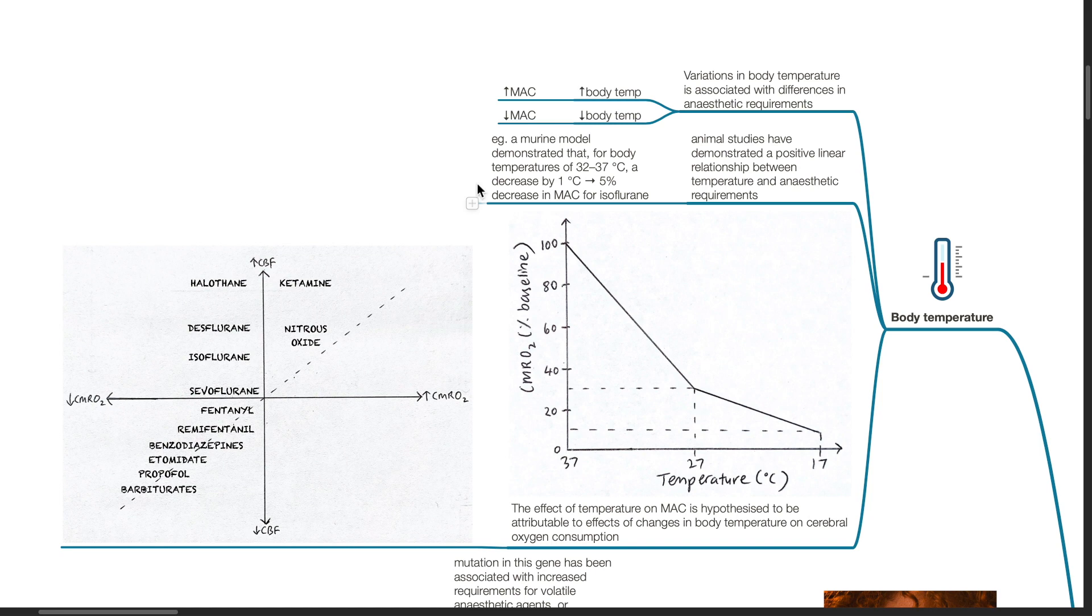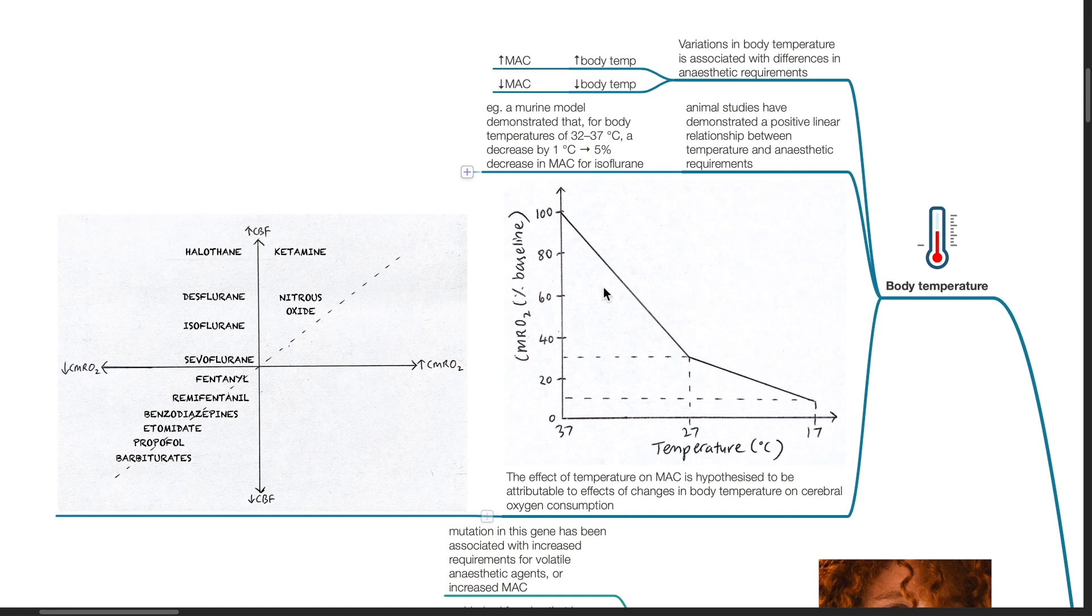A murine model demonstrated that for body temperatures of 32 to 37 degrees Celsius, a decrease by 1 degree Celsius results in 5% decrease in MAC for isoflurane. The net effect of temperature on MAC is hypothesized to be attributed to effects of changes in body temperature on cerebral oxygen consumption.